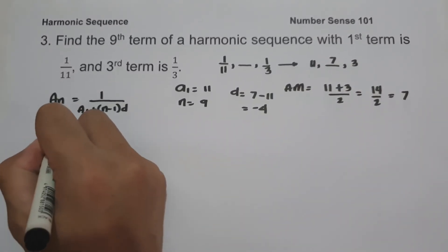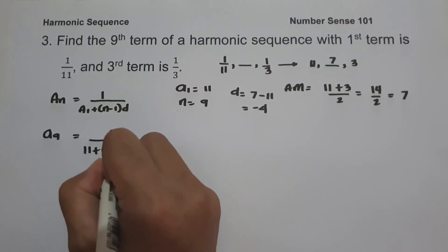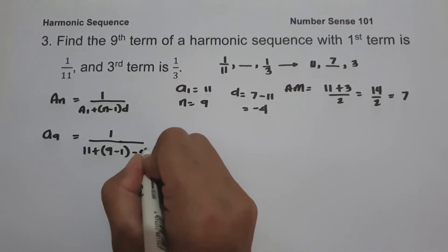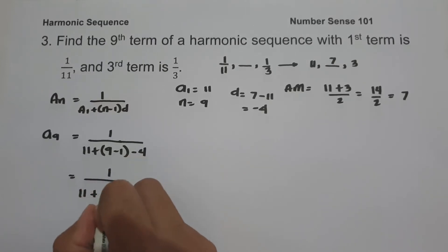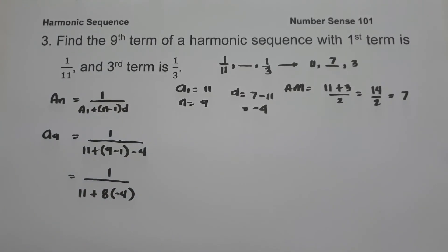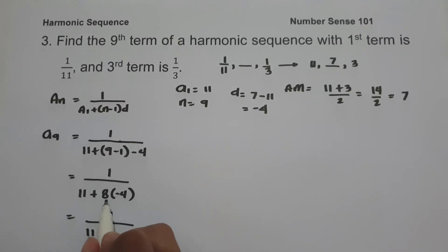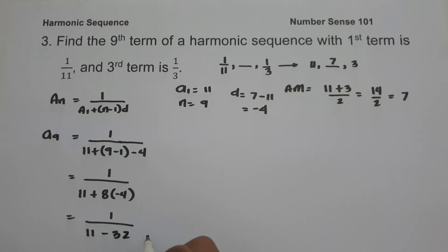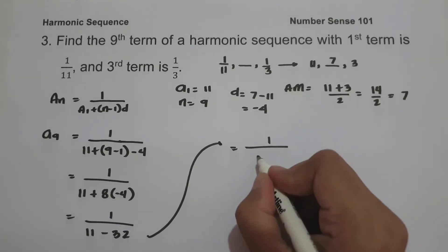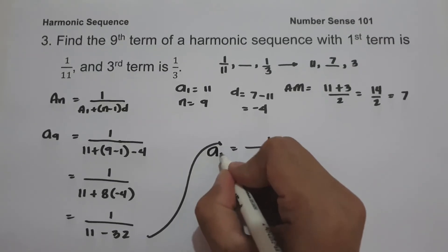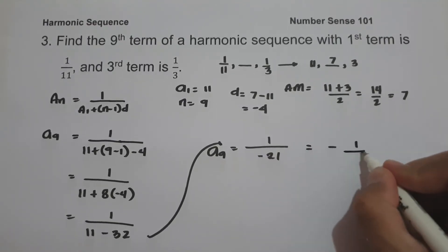So a sub 9 equals 1 over (11 plus (9 minus 1) times negative 4) equals 1 over (11 plus 8 times negative 4) equals 1 over (11 minus 32) equals 1 over negative 21. The 9th term in the given sequence is 1 over negative 21, which can also be written as negative 1/21.